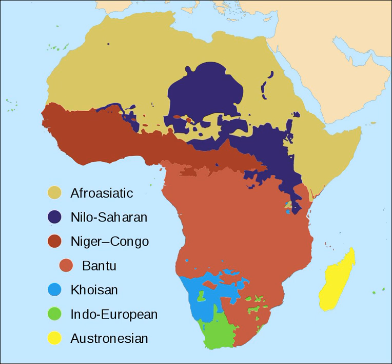Khoisan languages are concentrated in the Kalahari Desert of Namibia and Botswana. Niger-Congo languages cover West, Central, Southeast and Southern Africa. Nilo-Saharan languages are spoken from Tanzania to Sudan and from Chad to Mali. There are several other small families and language isolates, as well as languages that have yet to be classified.